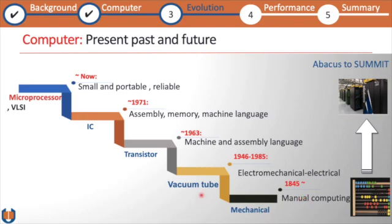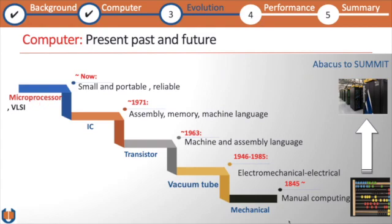To summarize the generations: we started with the big vacuum tube, then the transistor, then the integrated circuit, and right now we are in the era of very large scale integration, where a microprocessor contains billions of circuits. These are the steps we consider for the various generations of computers, and we are now in the modern computing era.